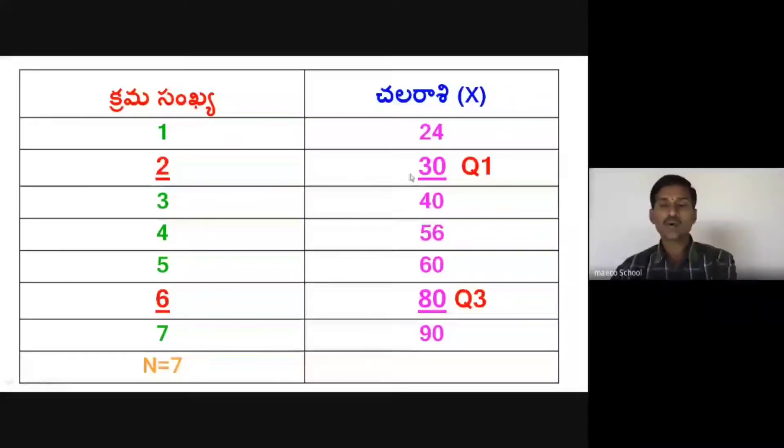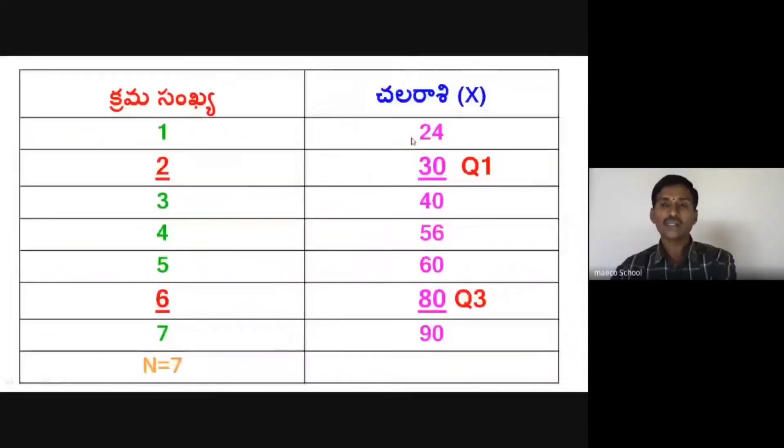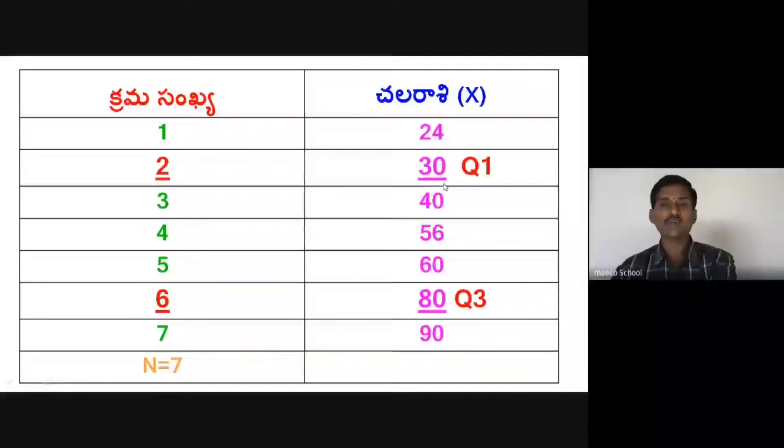The second item is 30. The value at serial number 2 is 30. Therefore, Q1 is equal to 30. This is the Lower Quartile or First Quartile.